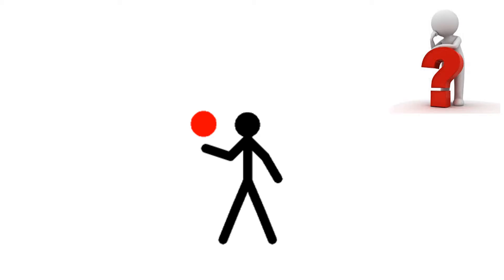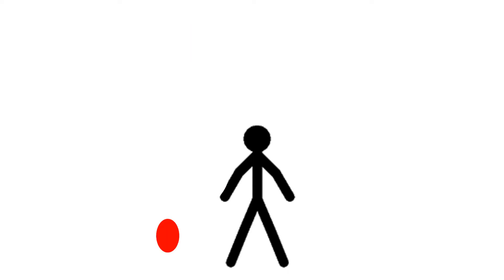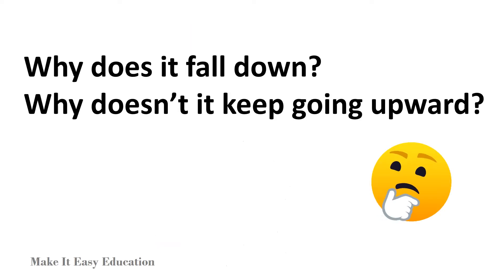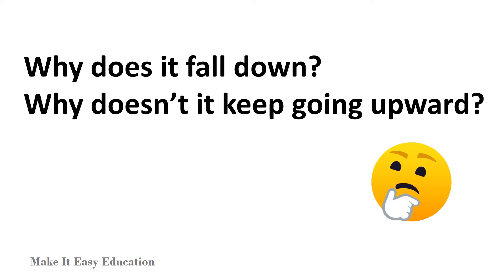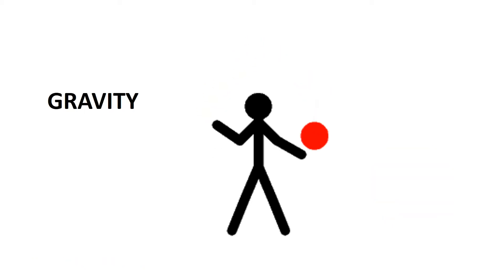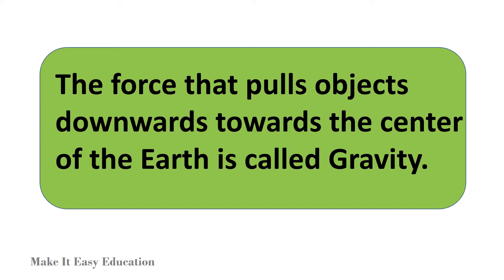Gravity. What happens when we throw a ball up into the air? It first rises up, then seems to stop, and then falls to the ground. Do you know why it falls down? Why doesn't it keep going upward? This is because of the force of gravity. The force that pulls objects downwards towards the center of the earth is called gravity.